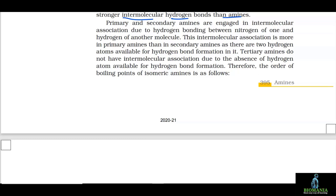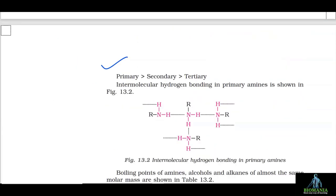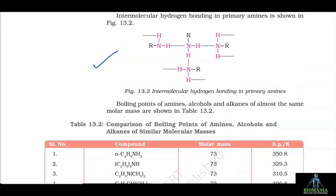Primary and secondary amines are engaged in intermolecular association due to hydrogen bonding between nitrogen of one molecule and hydrogen of another. This association is greater in primary amines than in secondary amines as there are two hydrogen atoms available for hydrogen bonding. Tertiary amines do not have intermolecular association due to absence of N-H hydrogen. Therefore, the order of boiling points of isomeric amines is: primary > secondary > tertiary. Boiling points of amines, alcohols and alkanes of similar molar mass are compared in table 13.2.